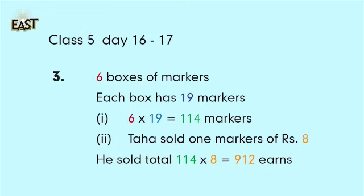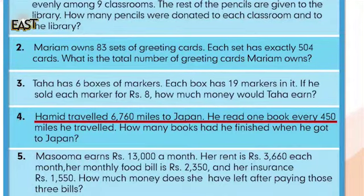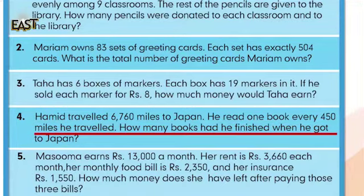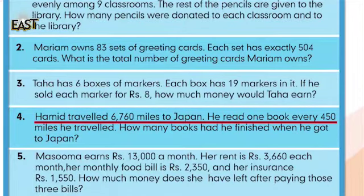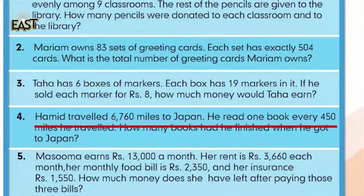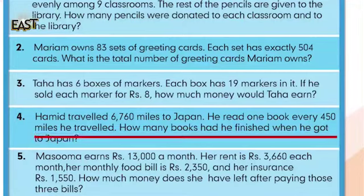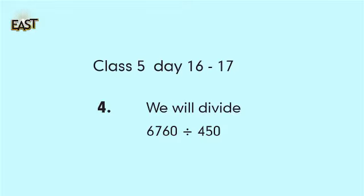Question 4: Hamid travels 6760 miles to Japan. He reads one book every 450 miles he travels. What does this mean? Hamid traveled a total of 6760 miles, and he finishes one book every 450 miles. The question is: how many books did Hamid finish by the time he reached Japan? So we simply divide: 6760 divided by 450. The solution comes out to approximately 15. You need to solve this in your notebook.